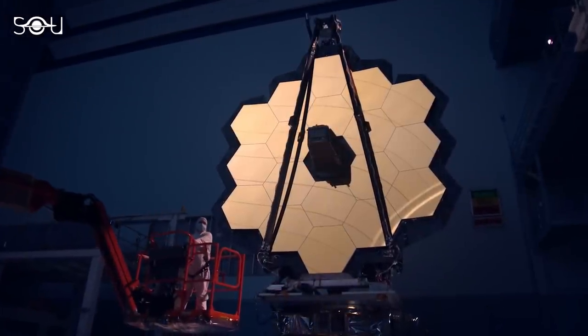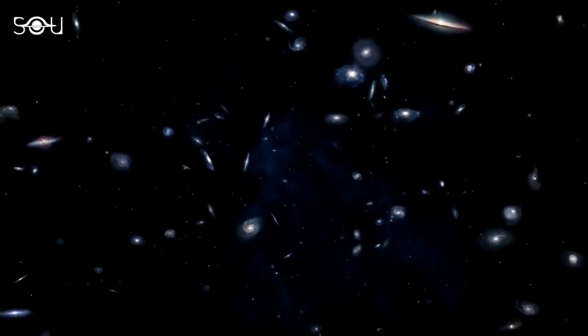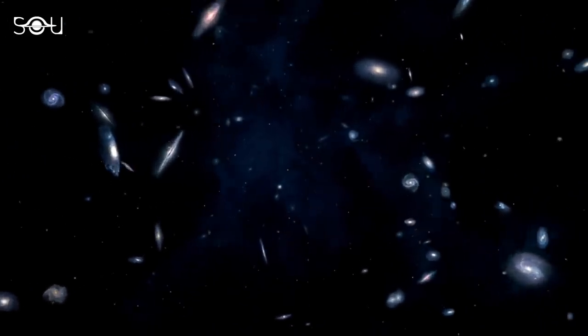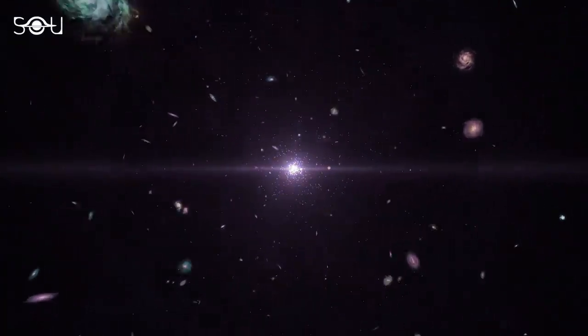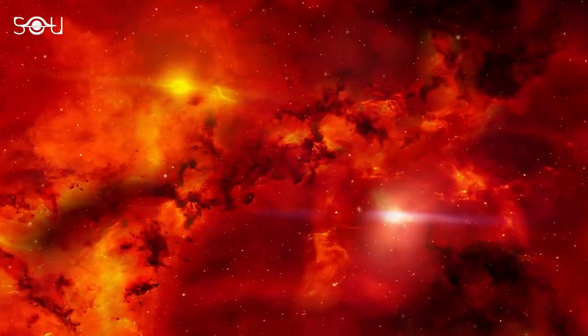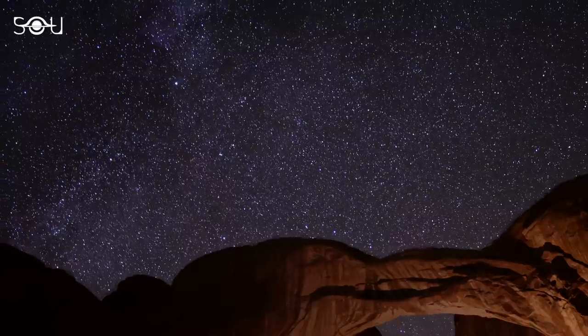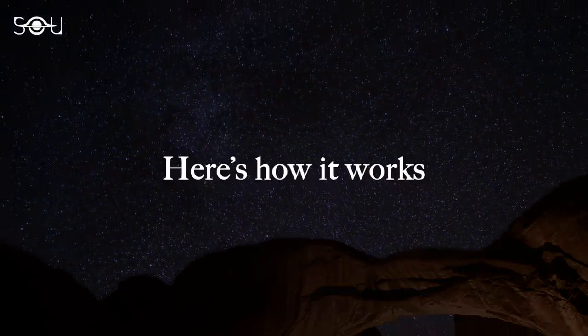When astronomers started working on building the James Webb Space Telescope, its primary science goal was to discover the most distant galaxies in the universe. To test the predictions made by the Big Bang Theory, it was important to look back in time to the era in which the stars and galaxies were taking birth. Although we have discussed it in past episodes of the series, here's how it works.